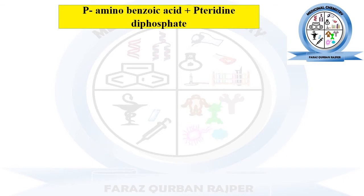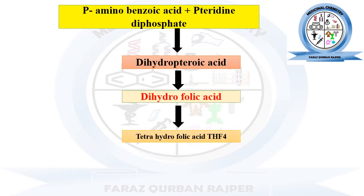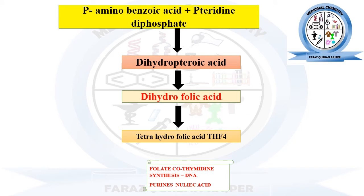Para-aminobenzoic acid and pteridine diphosphate will combine and by the action of an enzyme will get converted into dihydropteroic acid. The next step: dihydropteroic acid will be converted into dihydrofolate acid, then into tetrahydrofolate acid. Once tetrahydrofolate acid is formed, it acts as a precursor for the synthesis of folate coenzymes and thymidine synthetase, which are the nitrogenous bases essential for DNA synthesis and other purine nitrogenous bases.